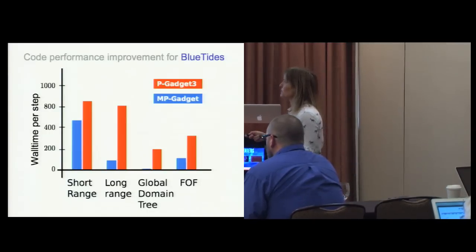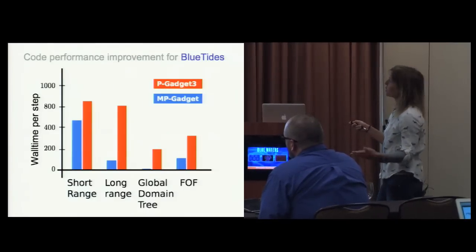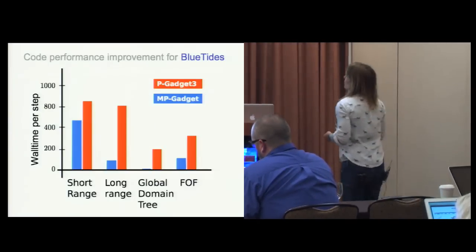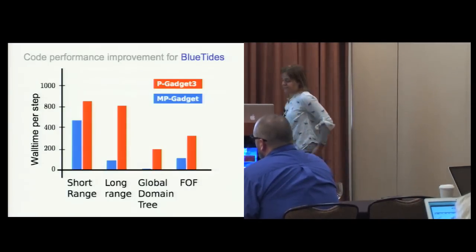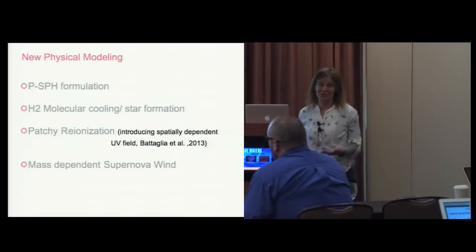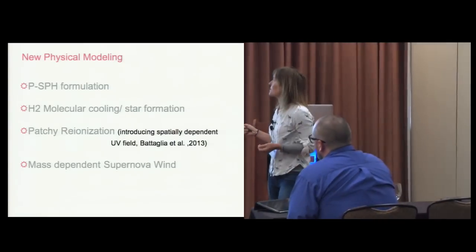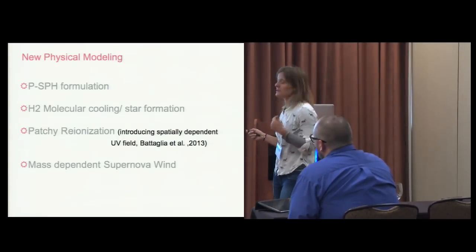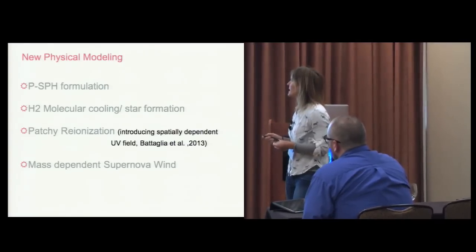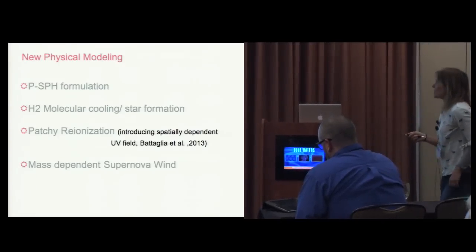Summarizing, we made significant progress in the short-range force, long-range force, the global domain tree, and friends-of-friends through the sorting algorithm. This plots the wall clock time per step and the decrease from the version of the code used in the largest Kraken run to now moving to Blue Waters. We're running very successfully even though we've added a lot of physics as well, including newer formalism for H2 molecular cooling and a model for patchy reionization.